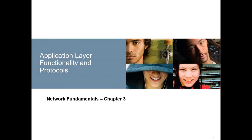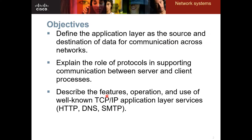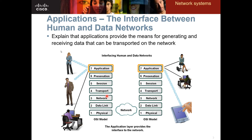I'm going to continue with the network systems mini lectures and we're going to start with the application layer. This forms chapter 3. It is humans who initiate communications — for example, this lady might want to send a message, this gentleman might want to make a phone call, and this person might be doing an Excel spreadsheet — and all of these require protocols.